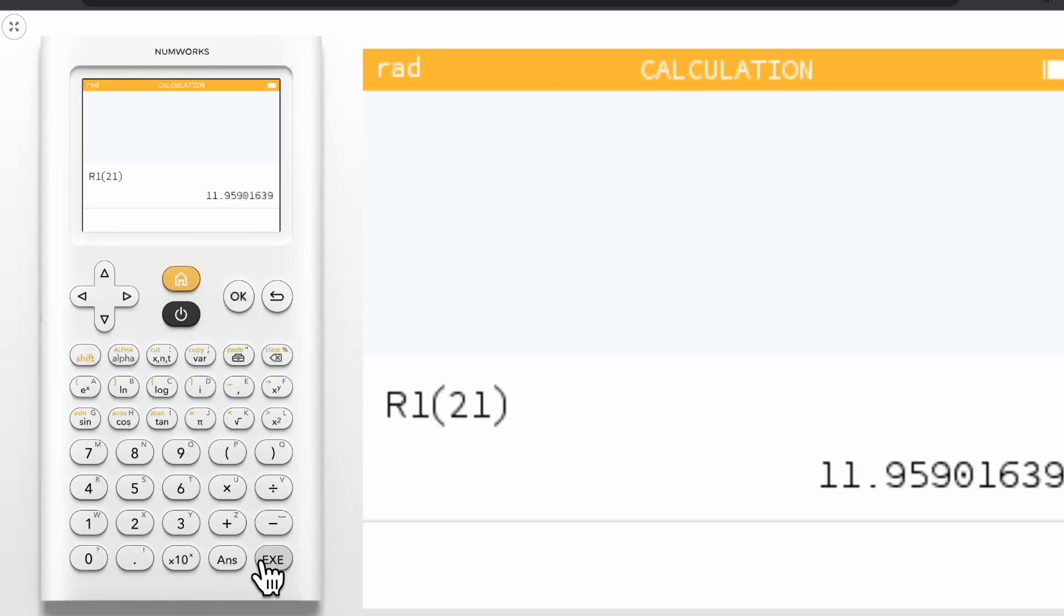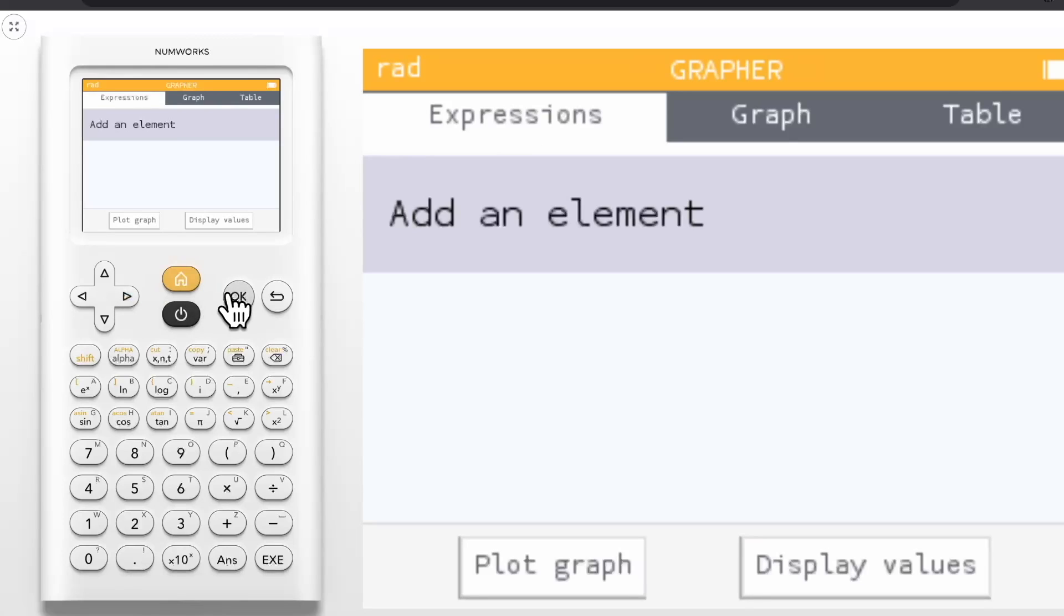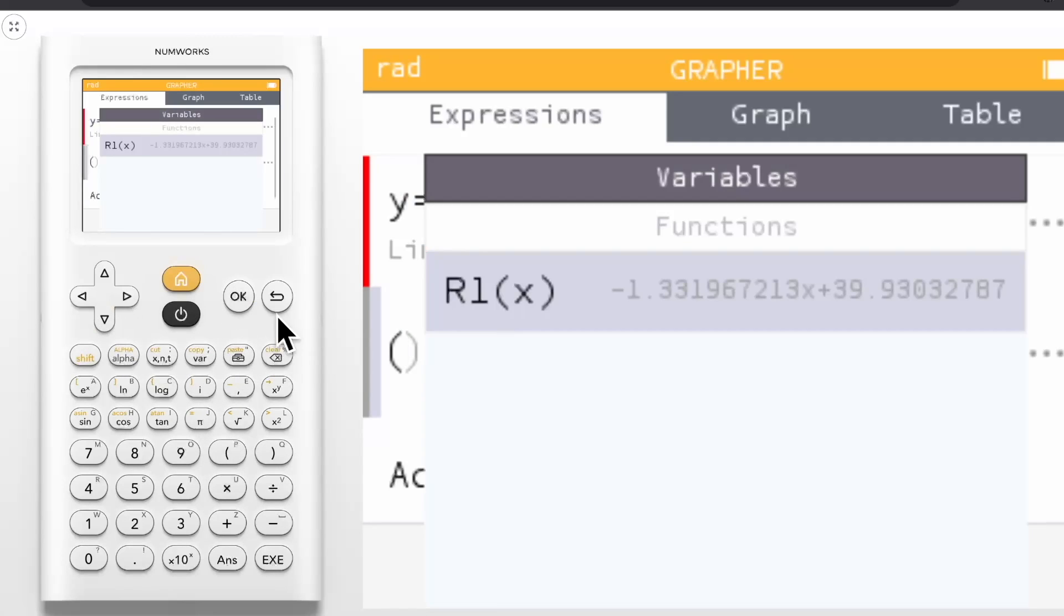Next, let's head to the grapher application. Now I can use the var key to grab the regression expression r1 of x, input x, to have this appear in the grapher. I can also add my scatter plot to the grapher by inputting the point x1, y1.